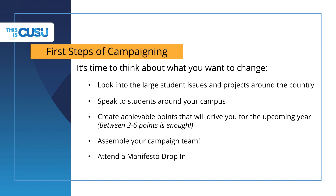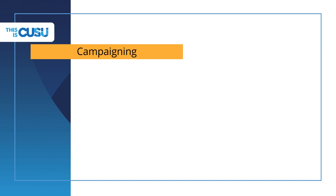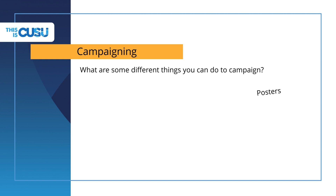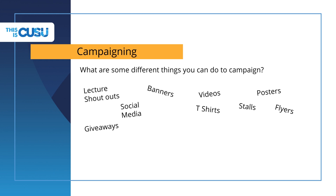Finally, try to attend a manifesto drop-in session if you can. These aren't mandatory, but they may give you a steer on how to spruce up your manifesto. So what ideas do you have around campaigning? Here are some ideas that may help you get started. You could do some lecture shoutouts — as long as you have the permission from your lecturer, there is no reason you couldn't talk to your lecture group to get them to vote for you.